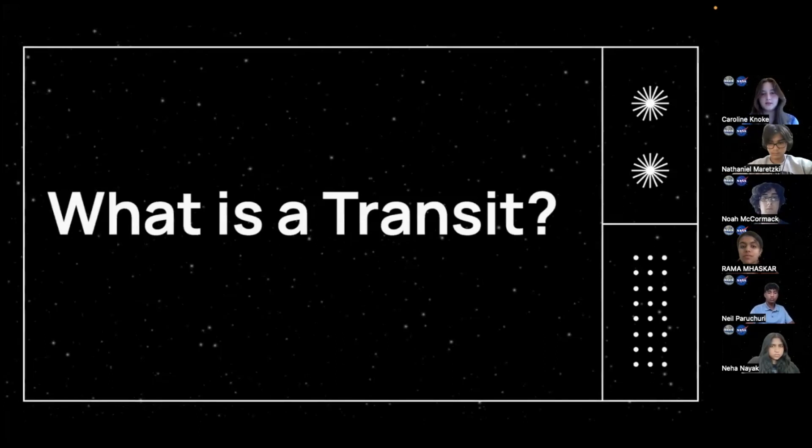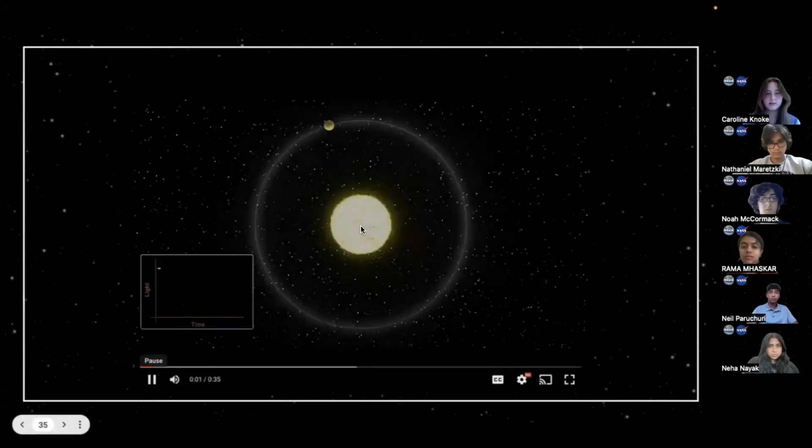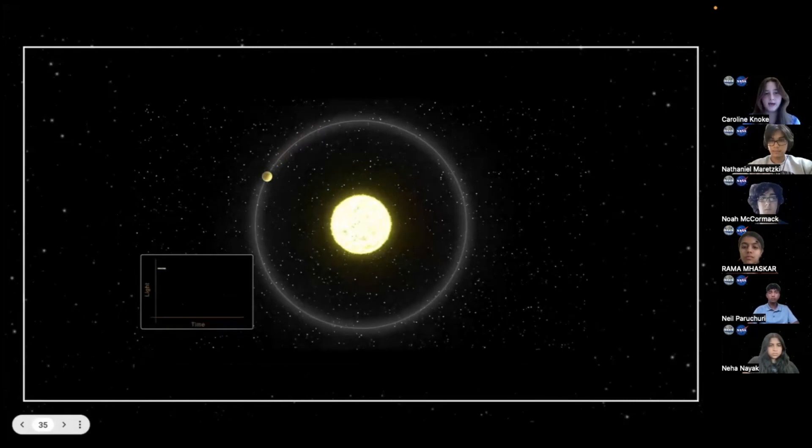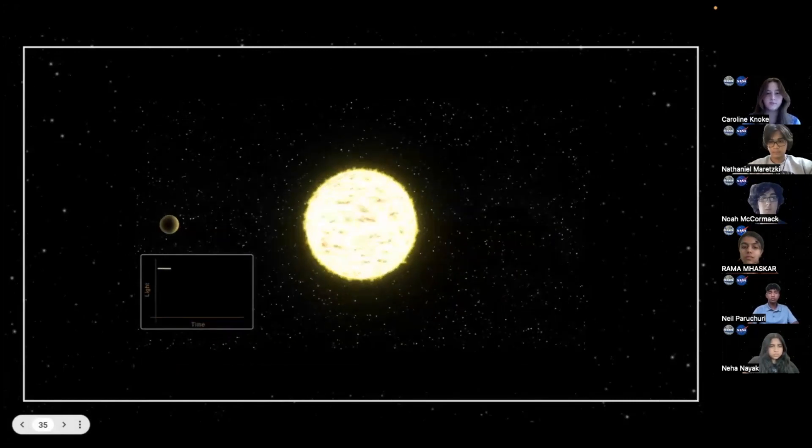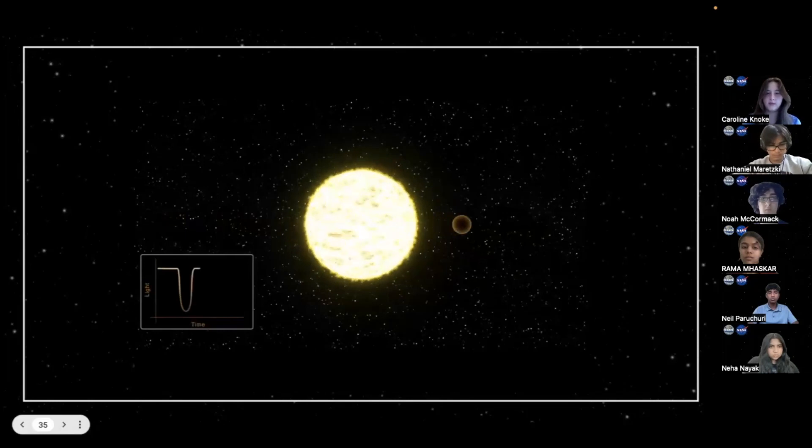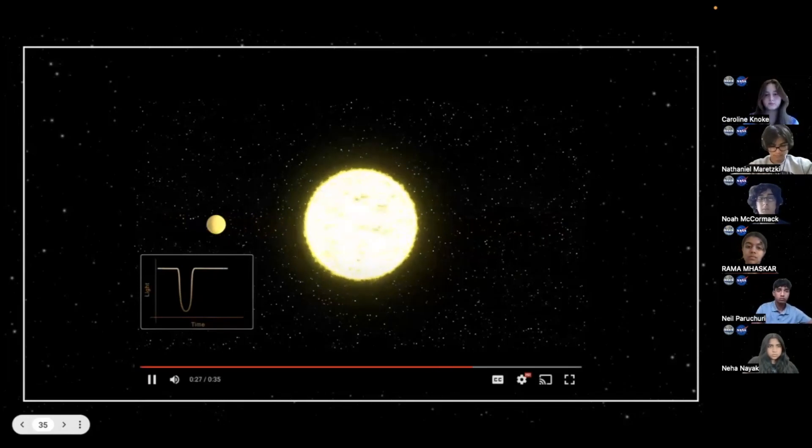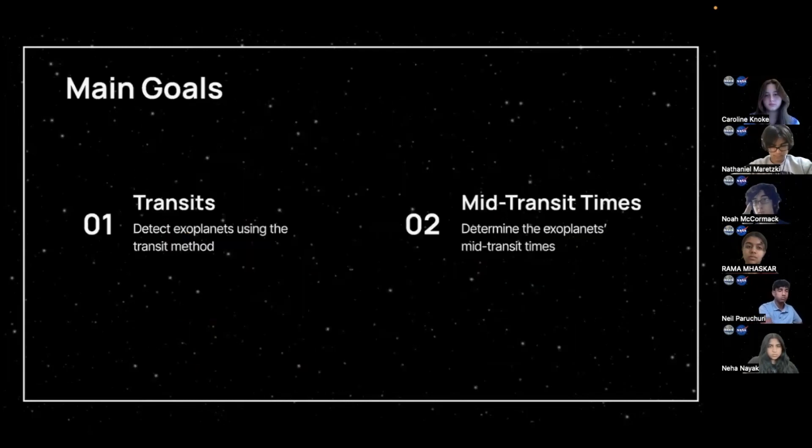So what is an exoplanet transit? This video illustrates when exoplanet transit is. It occurs when an exoplanet passes between its star and an observer. When this happens, the brightness of the exoplanet star temporarily decreases from an observer's perspective. Also, the mid-transit time of an exoplanet is when the exoplanet is directly in between its observer and its star, so the bottom of the graph.